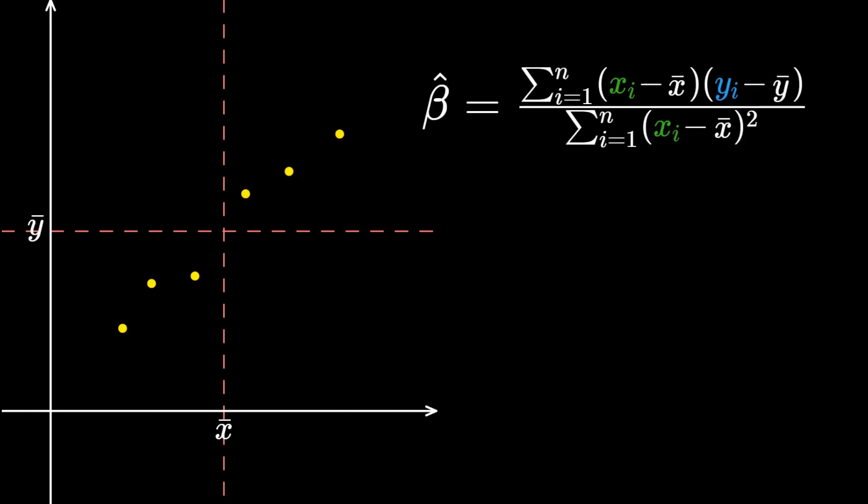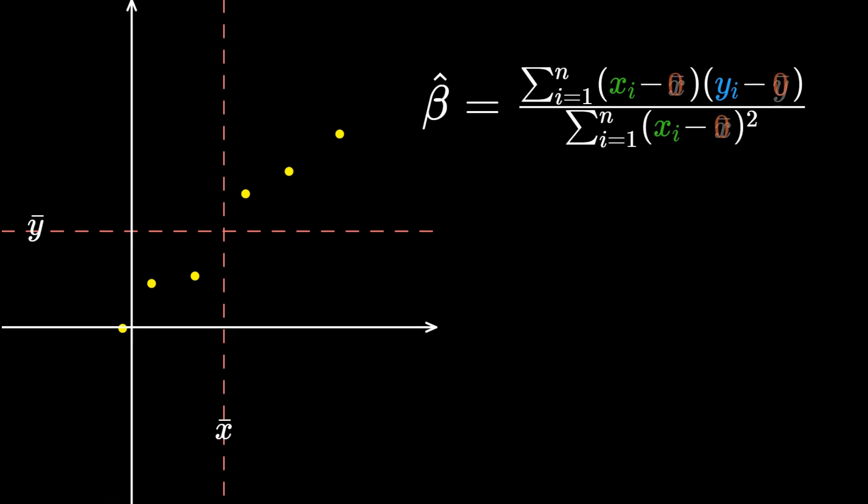Looking back at chapter 1, when I explained the formula for simple linear regression, if we somehow re-center the entire plot so that the centroid of all data points lies exactly on the origin, then x-bar and y-bar would both be zero, and the equation reduces to this form.